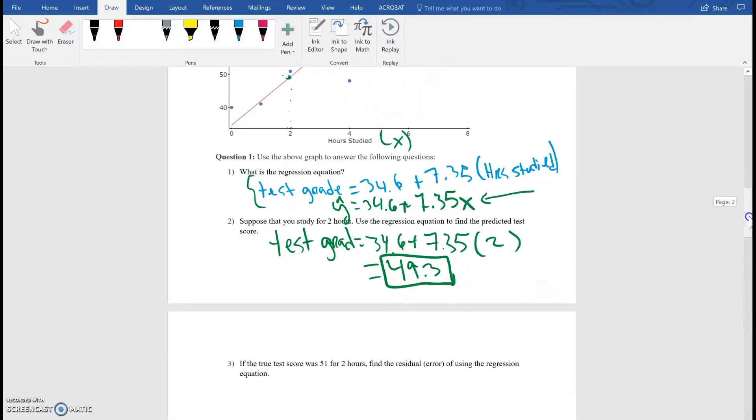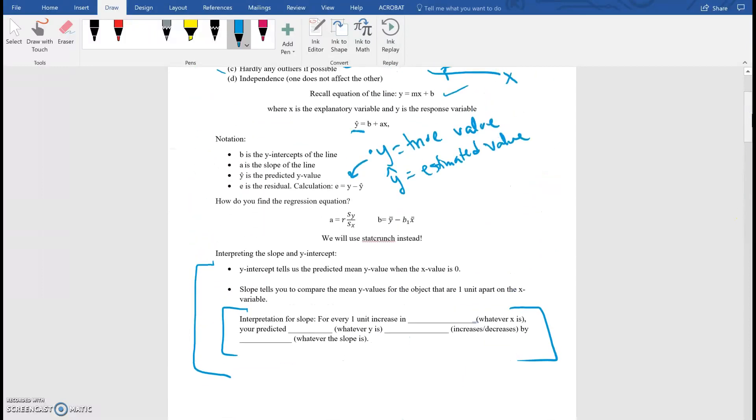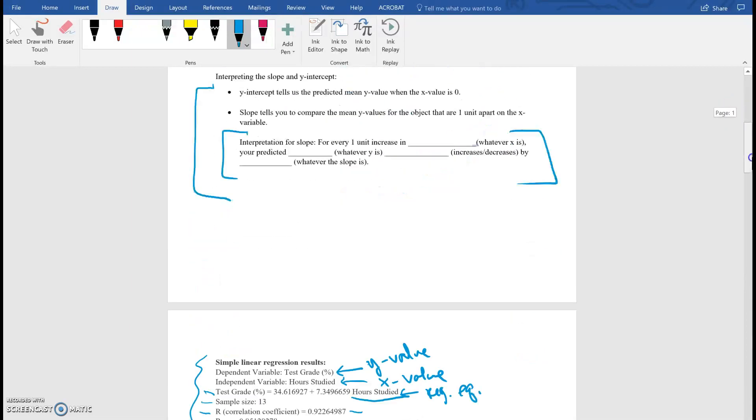If the true test score was 51 for two hours, find the residual or the error of using the regression equation. So let's go back and talk a little bit about residual. Residual is basically our error. So we said that residual was just the true value minus the estimated value. So I'm going to take the true value minus the estimated value. That's going to give us my error. And what we call in statistics, our error, we call it our residual. So it's going to be Y minus Y hat.